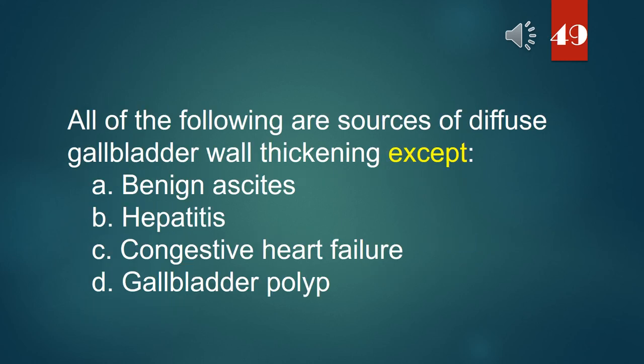All of the following are sources of diffuse gallbladder wall thickening except: A. Benign ascites. B. Hepatitis. C. Congestive heart failure. D. Gallbladder polyp. The answer is D. Gallbladder polyp.